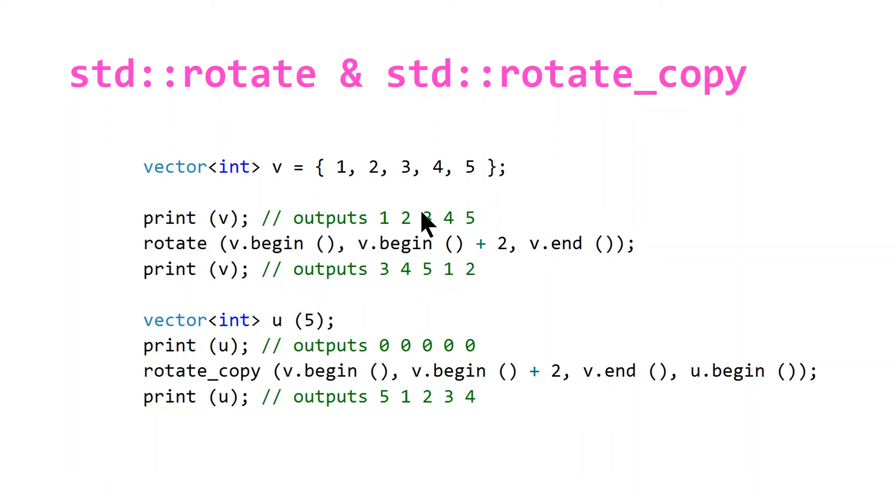And so what this ends up doing is shifting 3, 4, and 5 to the beginning and putting 1 and 2 at the end. So the next line here will output 3 4 5 1 2.